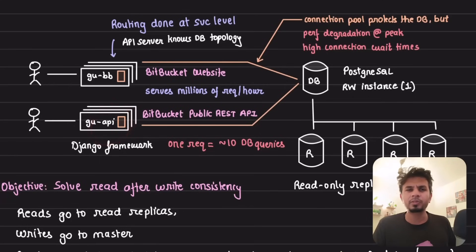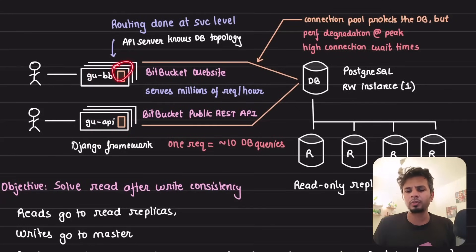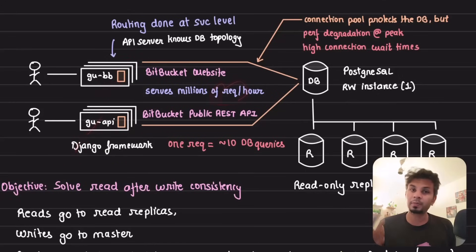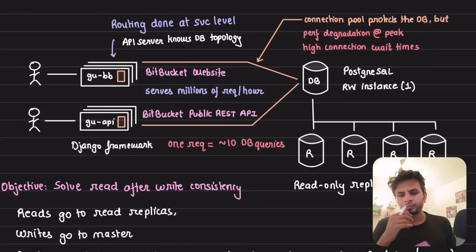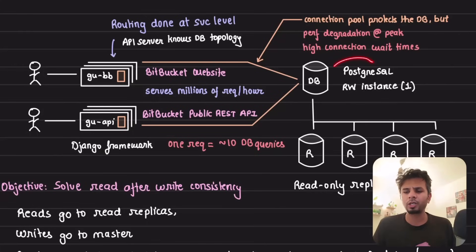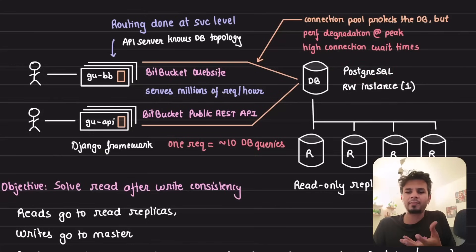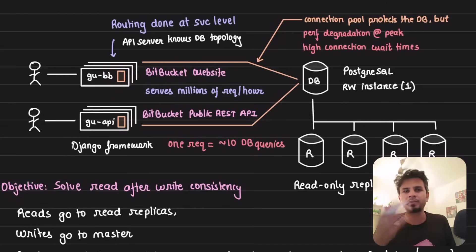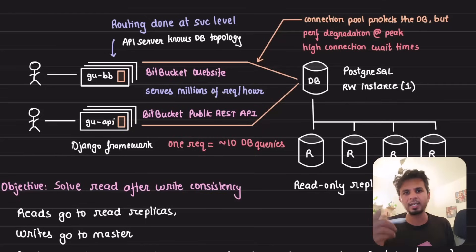They have their publicly exposed REST API and their main Bitbucket web UI, served through two services written in the Django framework. Both services handle millions of requests per hour. They use Postgres as their database, and because of that they typically have to employ a connection pool in front of it, because in Postgres whenever a client connects, Postgres spins up a new process rather than a thread, making it expensive.